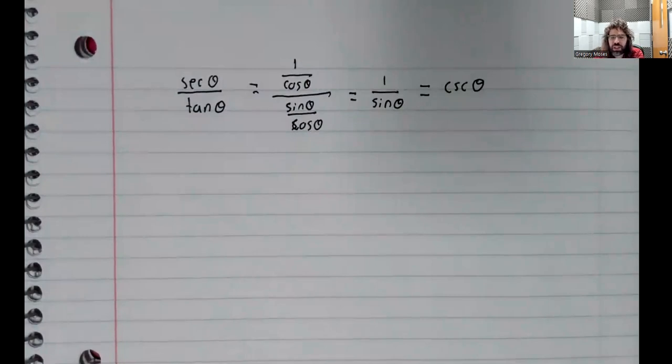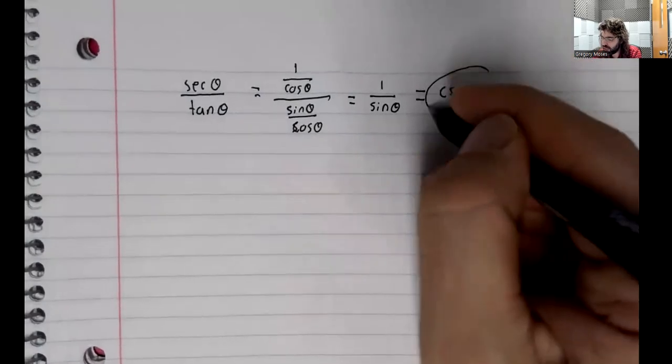So it's always worthwhile when you have something like this, one trig function divided by another, to pause a moment and check whether this can't be written in some simpler way.